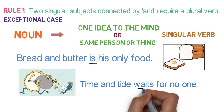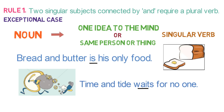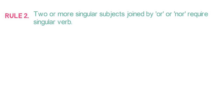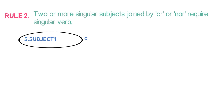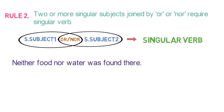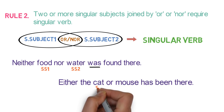This is Rule 1: two singular subjects connected by AND require a plural verb; remember the exceptional cases. Rule number 2 says: two or more singular subjects joined by OR or NOR require a singular verb. Here singular subject 1 joined by OR or NOR with singular subject 2 requires a singular verb. For example, 'Neither food nor water was found there' — food and water are joined by NOR, so singular verb WAS is used. 'Either the cat or mouse has been there' — cat and mouse are joined by OR, so singular verb HAS is used.